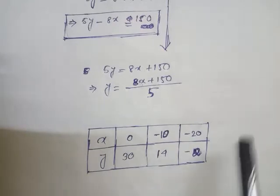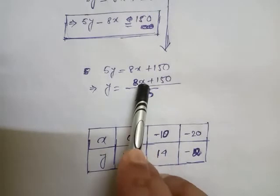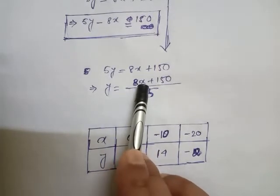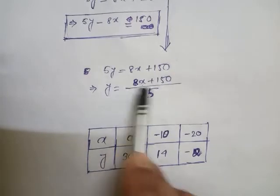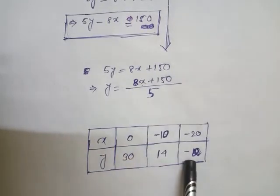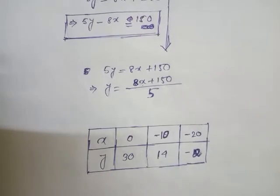There is minus 20. If x is minus 20, then 8 times minus 20 is minus 160. Minus 160 plus 150 divided by 5, which means there is minus 2 only. So, these are the total coordinates of this equation.